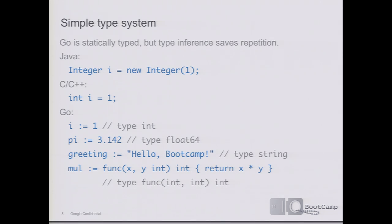Let's take a look at Go's type system. Go is a statically typed language, but the type inference system saves a lot of repetition. In Java or C++, you need to declare the type of your variable and then assign something of that type — for example, integer i equals new integer. But in Go, we can just say i colon-equals 1 to declare a new integer equal to 1. If we use a floating point initializer it'll be float64, and if we use a string it'll be a string. In this final example, I've created a function value mul which multiplies two integers and returns an integer, and the type will be inferred accordingly.